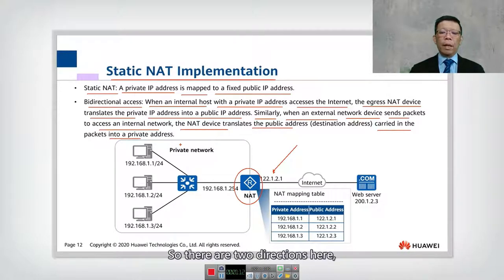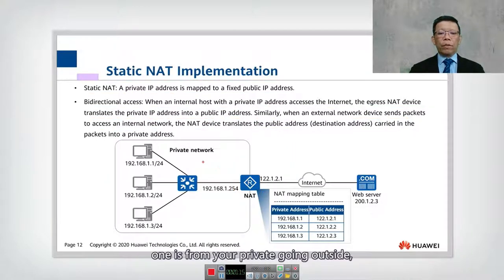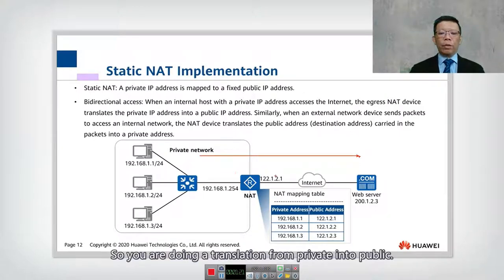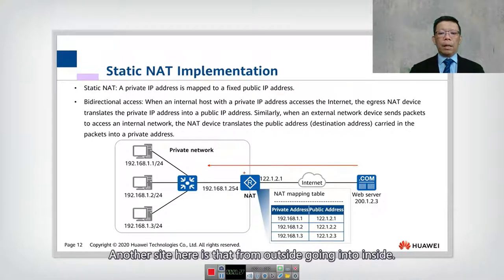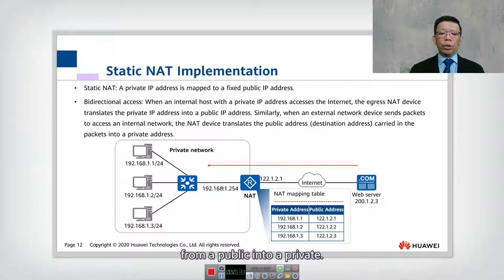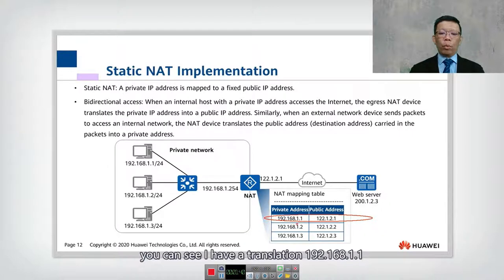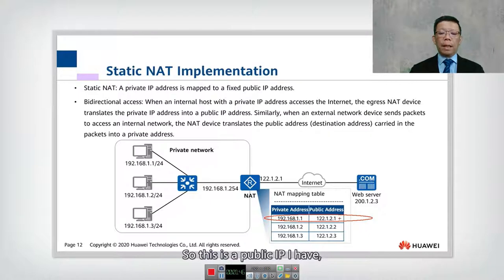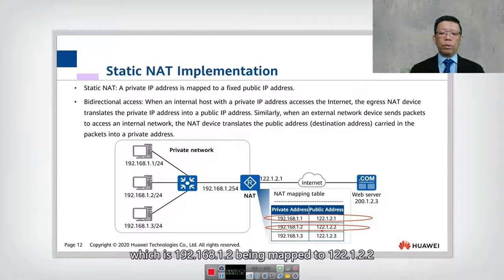There are two directions here. One is from private going outside — translating private into public. The other is from outside going into inside — translating public into private. In this example, 192.168.1.1 is mapped to 122.1.2.1, and 192.168.1.2 is mapped to 122.1.2.3.